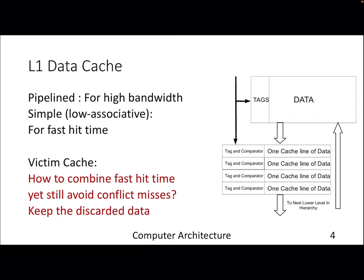L1 Data cache is closer to the processor and needs high bandwidth and low latency, so the hit time should be pretty fast — in a few cycles, one to four cycles. That's why we can't have highly associative caches, like 16-way associative, because that will increase tag comparison time and affect your hit time. So to improve the effectiveness of private L1 Data cache while keeping low associativity, conflict misses will be high — this is a trade-off between conflict misses and hit time.